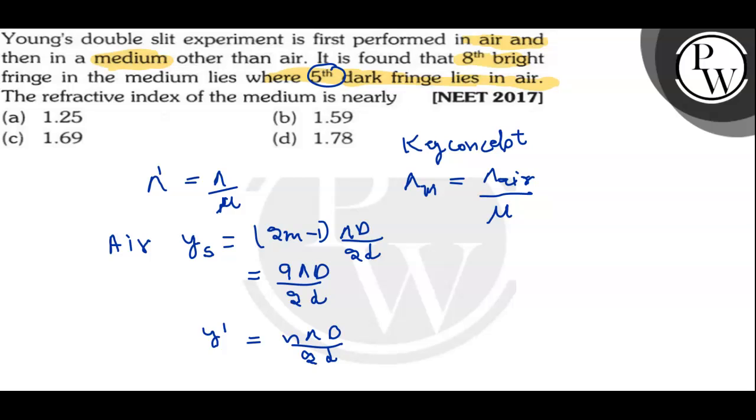N is basically 8. So, this is equal to 8 of lambda D. You can say 8 of lambda D by 2D. Here, it would be capital D. 8 lambda D upon 2D. Okay, now these both are equal.